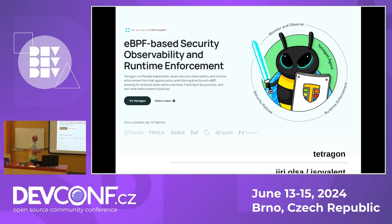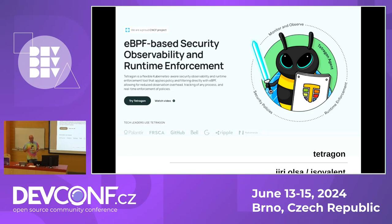So what is Tetragon? It's an eBPF-based security observability and runtime enforcement tool, which in plain English means it's a tool that allows you to monitor the Linux kernel — and not only that, to some extent it can even change the behavior of executed functions. It's written in Golang and can be used both as a standalone tool and as a library. It's easily extensible, so some people use Tetragon as a base to build their own tracing solution.